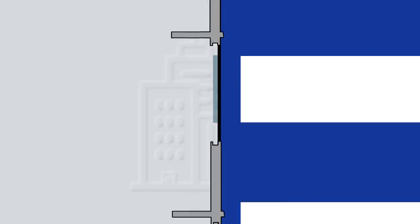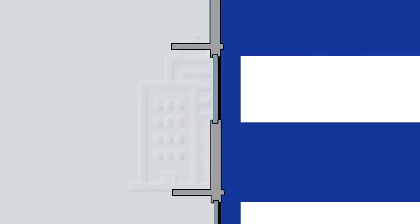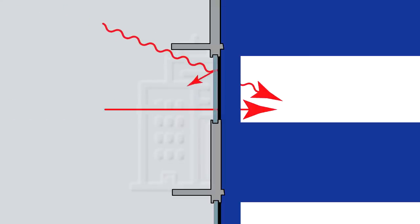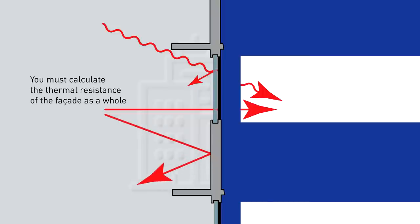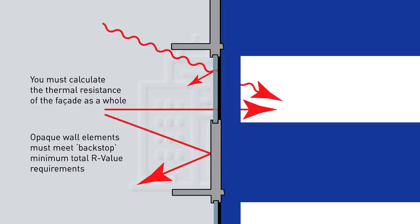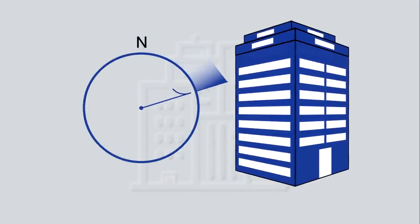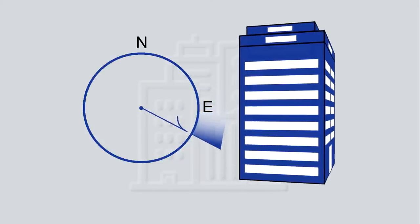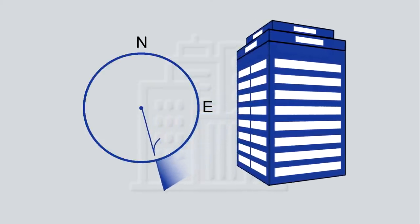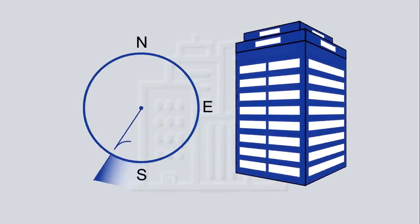One significant change in NCC 2019 is that you must now calculate the thermal resistance of the facade as a whole, rather than having separate requirements for walls and windows, although opaque wall elements still need to meet backstop minimum total R-value requirements. Another change is that it is now possible to trade performance between North, South, East and West aspects using a deemed-to-satisfy compliance pathway.